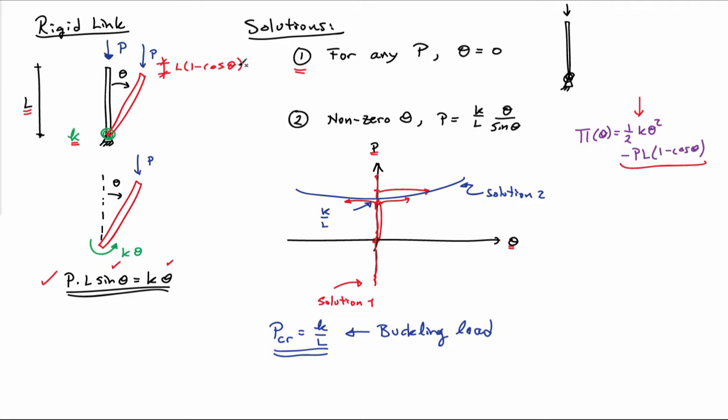This distance here is simply L times one minus cosine theta. So if I have a positive theta, the load is going to move down. That's why we have a negative sign here. The thinking here is P is some kind of static load. You can think of it as a weight sitting up there. So there's a gravitational potential, which is just P times Z in the system.